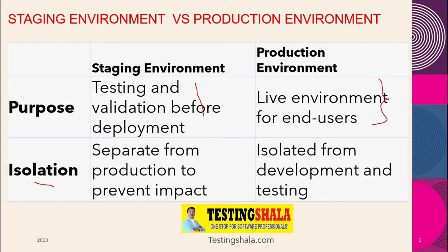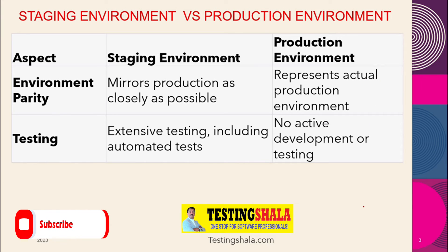The second key difference is isolation. Normally, the staging environment is kept completely separate and is not merged with the production environment, because if we kept the production environment the same as staging, we would run into major issues. We try to isolate staging separately from the production environment.